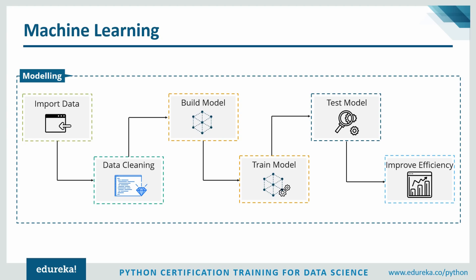The next stage in machine learning is creating a model. Here you perform data splicing, which is splitting the data set into two sets — one for training your model and one for testing your model. You then build the model using the training data set. These models are built using machine learning algorithms like k-nearest neighbor, support vector machines, linear regression, and so on. For a problem like a recommendation engine, you can make use of clustering and classification algorithms such as k-nearest neighbor or the k-means algorithm.